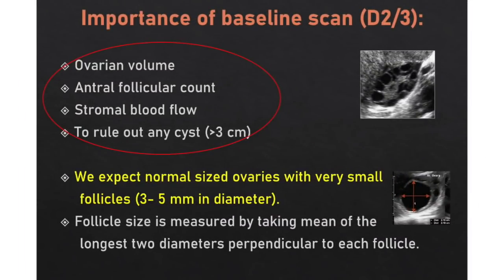The importance of baseline scan is that we evaluate ovarian volumes, antral follicular count, stromal blood flow, and rule out any cyst from the previous cycle which is more than 3 cm, as this can suppress the growth of recruited follicles. All these parameters are primary determinants of success in the induced cycle. We expect normal size ovaries with very small follicles, 3 to 5 mm in diameter. Measuring follicle size is done by measuring 2 diameters perpendicular to each other and taking their mean.